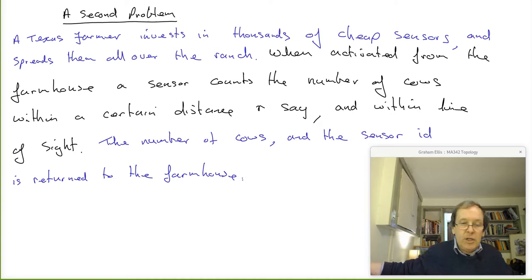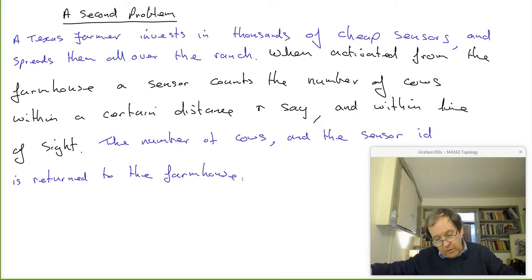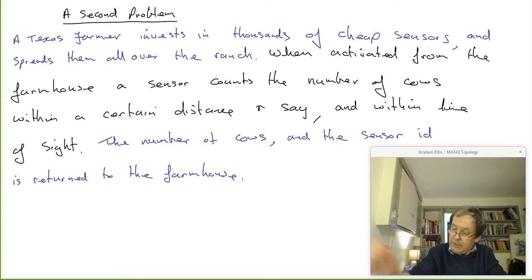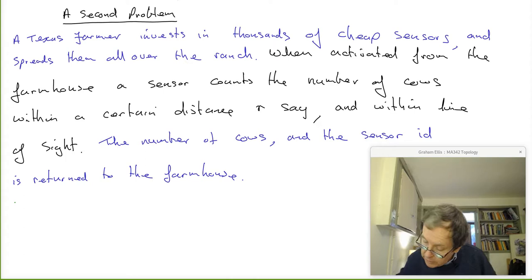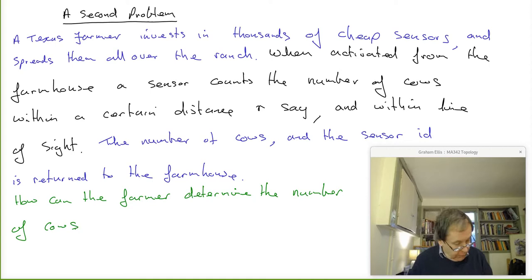The farmer presses go and instantaneously gets back all these numbers from, say, 10,000 sensors on the farm: this sensor sees 20 cows, this one sees 5, this one sees 9, that one sees 3, this one sees none. The farmer knows where the sensors are because he or she placed them there. The question is: how can the farmer determine the number of cows on the ranch from this data?